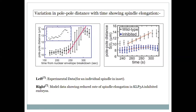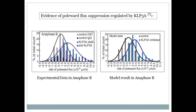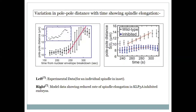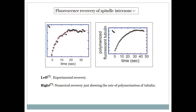The fluorescence recovery data (FRAP) is also reproduced numerically and shows the same result: there is polymerization of the plus ends of IPMTs in the spindle interzone. The pole-pole distance increment is correlated with suppression of poleward flux — these two quantities together confirm KLP3A's role.